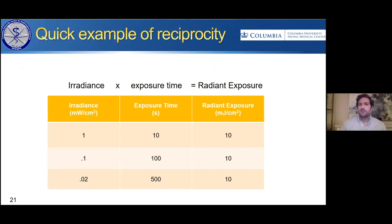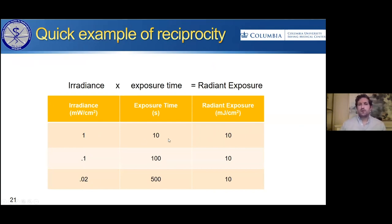A quick example of reciprocity: three different irradiance values — 1, 0.1, and 0.02 — with three different exposure times — 10 seconds, 100 seconds, and 500 seconds — all give the same radiant exposure, the same dose. So we would expect all three of these exposure conditions to produce the same effect on a microbe.